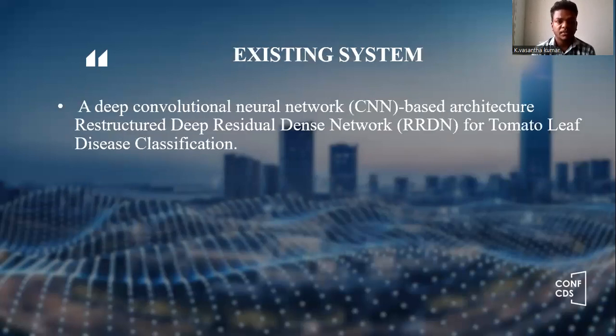Existing system: a deep convolutional neural network CNN-based architecture — a pre-structured deep residual dense network (RRBN) — for tomato leaf disease classification.